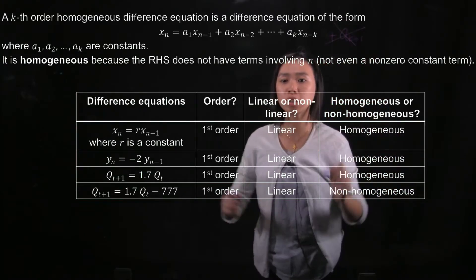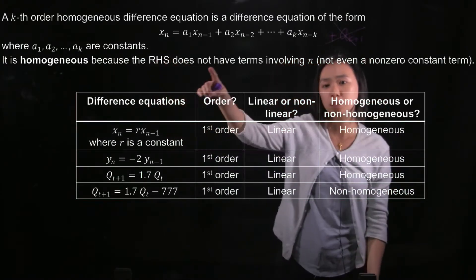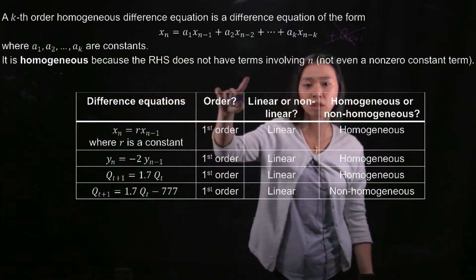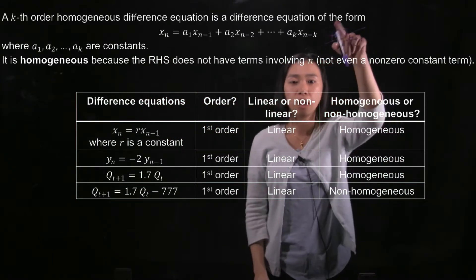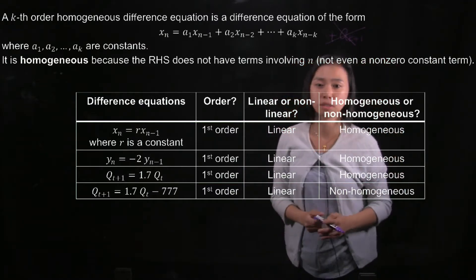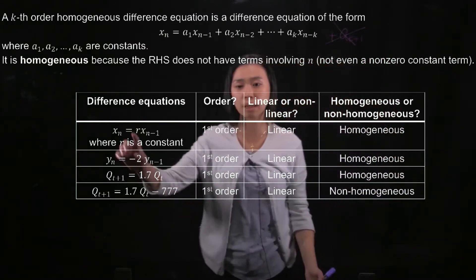In a homogeneous difference equation, it is homogeneous because the right-hand side does not contain any terms involving n, or not even a non-zero constant. We will go through some examples.